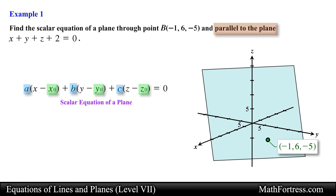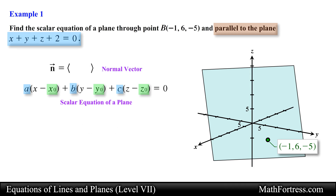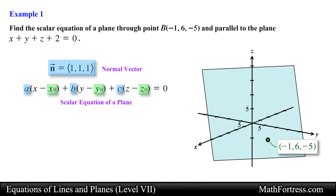We already know that both planes are parallel to each other, so both planes will also have the same normal vector. We can determine the normal vector of the plane by using the scalar equation of the plane parallel to it — we take a look at the coefficients of the scalar equation of the plane and obtain the normal vector. Now it is just a matter of using this normal vector along with point B to write the equation of the plane.